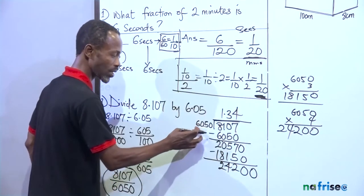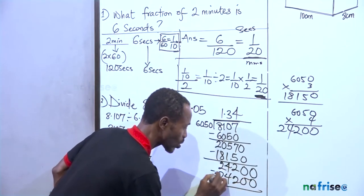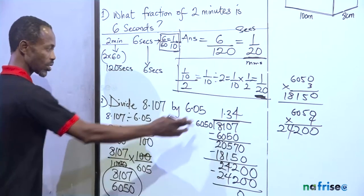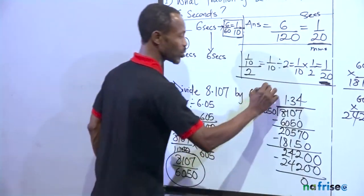So 4 times 6,050 will give us 24,200. When you subtract this, nothing. So this is your answer here. So if we divide these by these, you will get this.